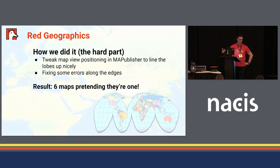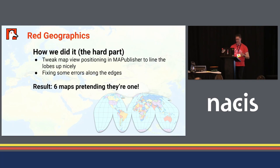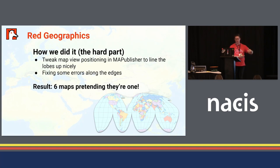A map view is basically a collection of layers that share the same scale, projection, and position on your map. Then came the hard part — because technically this is six separate maps pretending to be one. I had to line them up exactly, which took a little bit of hard work. Because of the clipping of the data, there were some errors along the edges where some meridian lines were in one lobe but not the other, and I wanted them in both. So there was a little bit of manual fixing along the edges. The end result is six maps pretending to be one — like a couple of children standing on each other's shoulders in a large trench coat pretending to be an adult. This is the map equivalent of that.